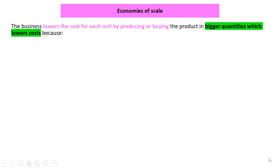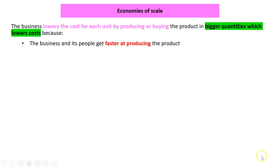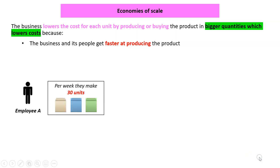Let's look at the first one: economies of scale. It's a very useful term, probably more of an economics term, not really in our course, but it's very good for this topic. It means the business lowers the cost for each unit by producing or buying the product in such big quantities that it lowers costs. Why does it lower costs? Because the business and people, because they make so much of it, they get faster at producing it.